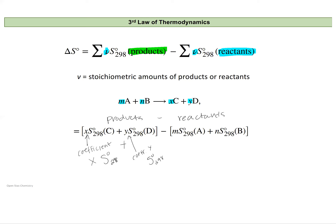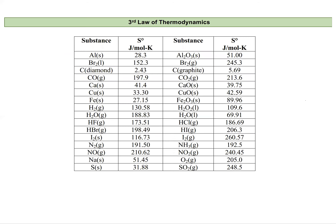Let's look at some standard entropies before we go further. Here's a table — your book should have one that looks a little different — listing different substances with their standard entropies at 298 Kelvin. Note that the units are joules per mole times Kelvin, so these are molar standard entropies for one mole of a substance.